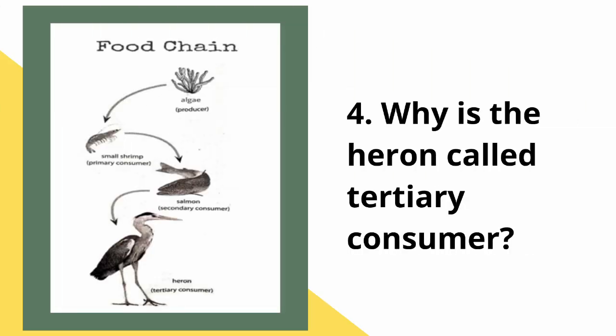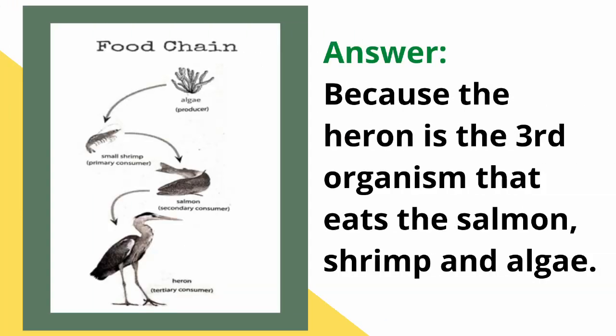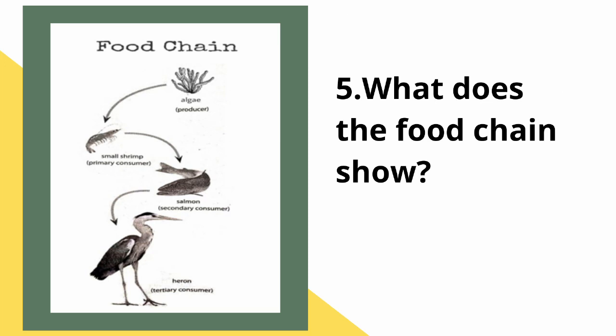Number four: why is the heron called the tertiary consumer? Answer: because the heron is the third organism that eats the salmon, shrimp, and algae. Number five: what does the food chain show?